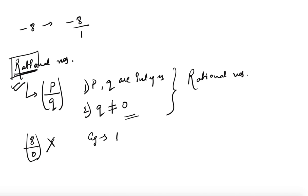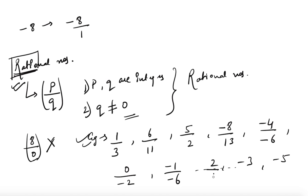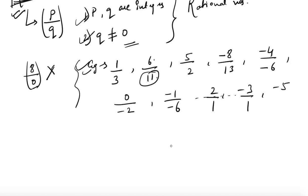Let us take a few examples: 1 by 3, 6 by 11, 5 by 2, minus 8 by 13, minus 4 by minus 6, 0 by minus 2, minus 1 by minus 6, and also 2, minus 3, minus 5 — all these come under rational numbers. Why is 2 a rational number? Because 2 is nothing but 2 by 1. Why minus 3? Because minus 3 is minus 3 by 1. Take 6 by 11: both 6 and 11 are integers, and 11 being the denominator is not equal to zero — hence it is a rational number.